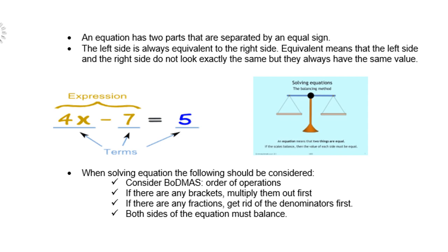When solving equations, the following should be considered. You must always consider BODMAS. That is the order of operations. Remember, B means bracket, O means other like square or square root, D means division, M means multiplication, A means addition and S means subtraction. If there are any brackets, multiply them out first. If there are any fractions, get rid of the denominators first. Both sides of the equations must balance.